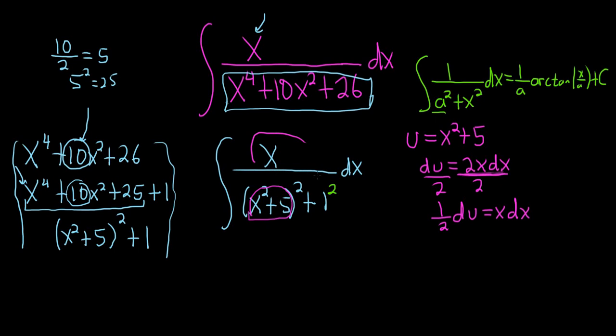And so now we're ready to make our substitution. So x dx can become 1 half du. So we'll pull out the 1 half. Then we have our du. And on the bottom we have u squared plus 1 squared.